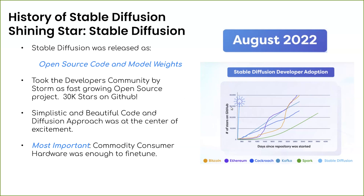If you see this graph, all these lines show the number of days versus GitHub stars for various repositories — Bitcoin, Ethereum, Kafka, Spark, and others. But if you see Stable Diffusion, it's almost not visible because it's almost vertical. Within less than 200 days, it reached the top of most popular libraries with more than 30,000 stars. It literally became popular within a matter of weeks and took the world by storm.